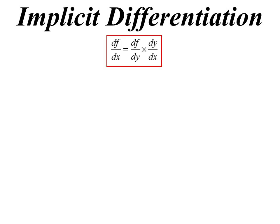Implicit differentiation is what we're going to look at, and actually it is something we've already seen, just under different names. We've called it the chain rule, we've called it rates of change. It's all the same thing.